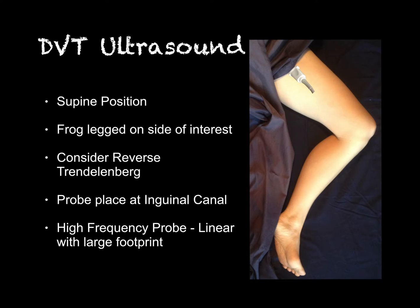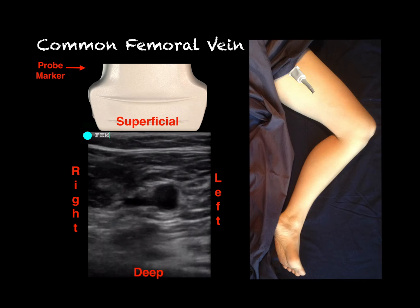When positioning patients, put them in a supine position and lower the head of the bed down so they are completely supine. With obese patients, the abdomen can hang over the inguinal area, making it hard to evaluate that region — so lay them flat and stretch out their back. Additionally, have them bend their knee and externally rotate, putting them in a frog-leg position. You can also use reverse Trendelenburg to make veins more plethoric and easier to see. Use a high-frequency linear probe placed right up near the inguinal ligament.